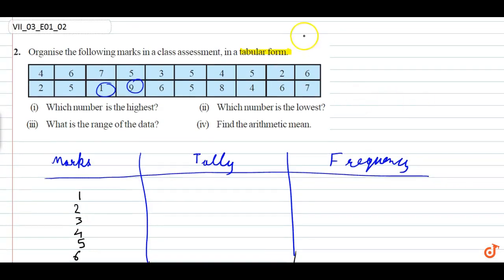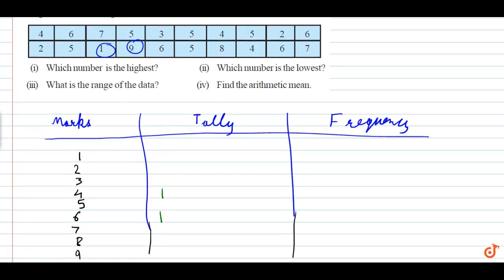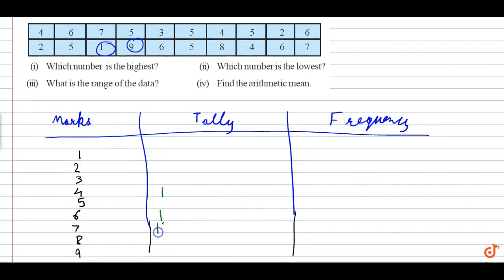Now we create the tally marks. Going through the data, first is four, then six, then seven, five, three, five, four, five, two, six.